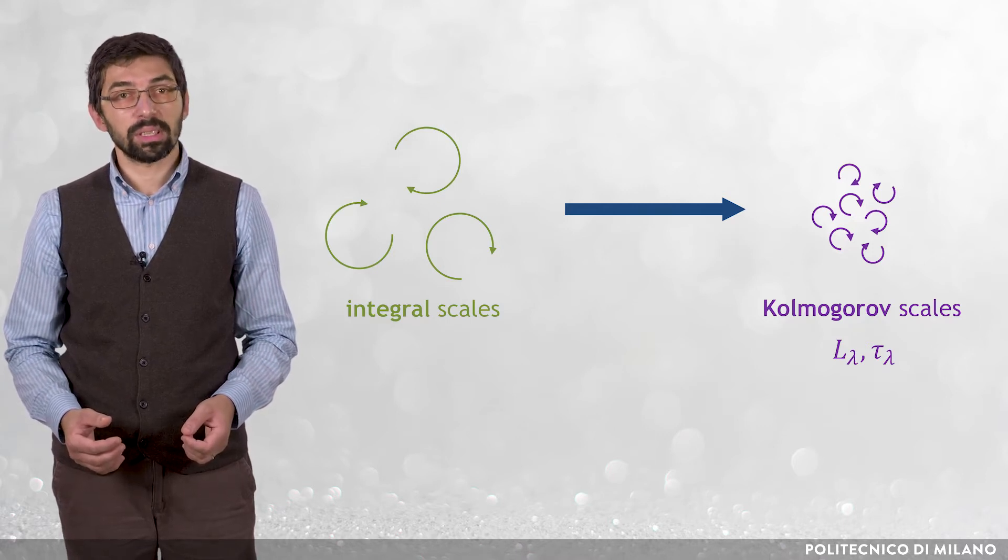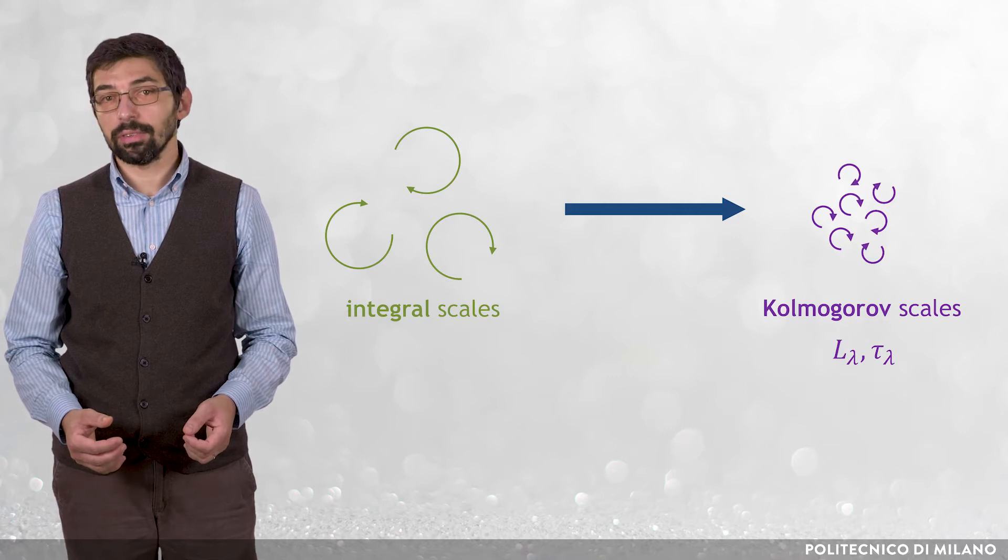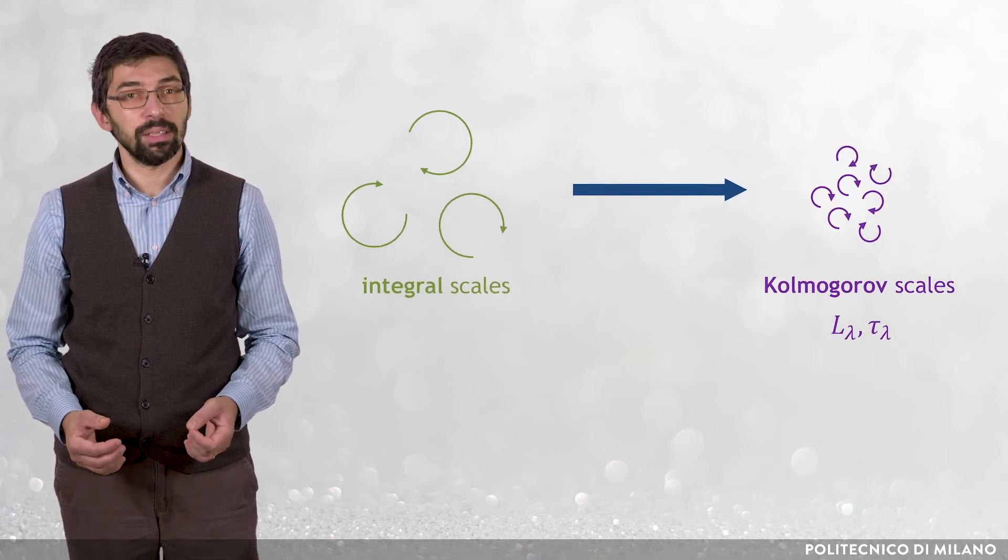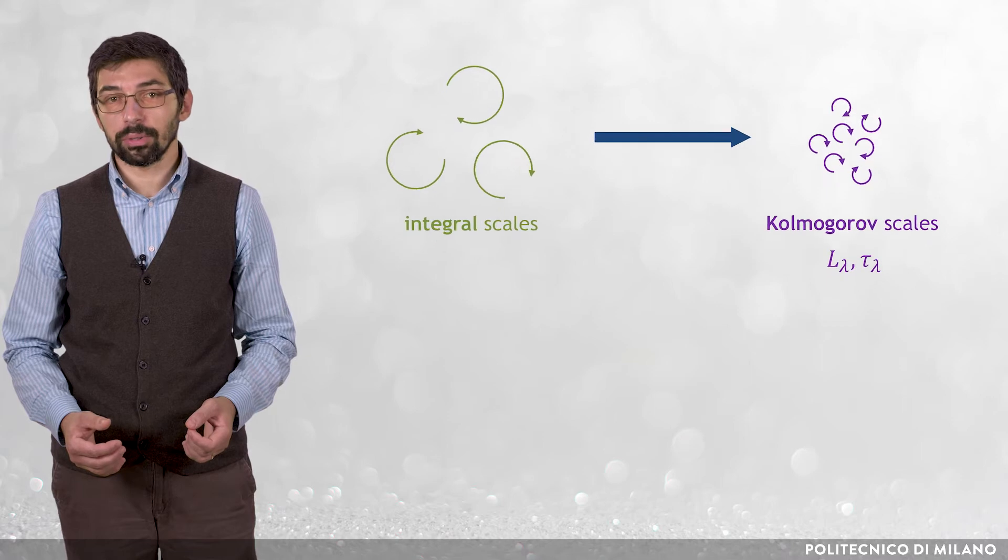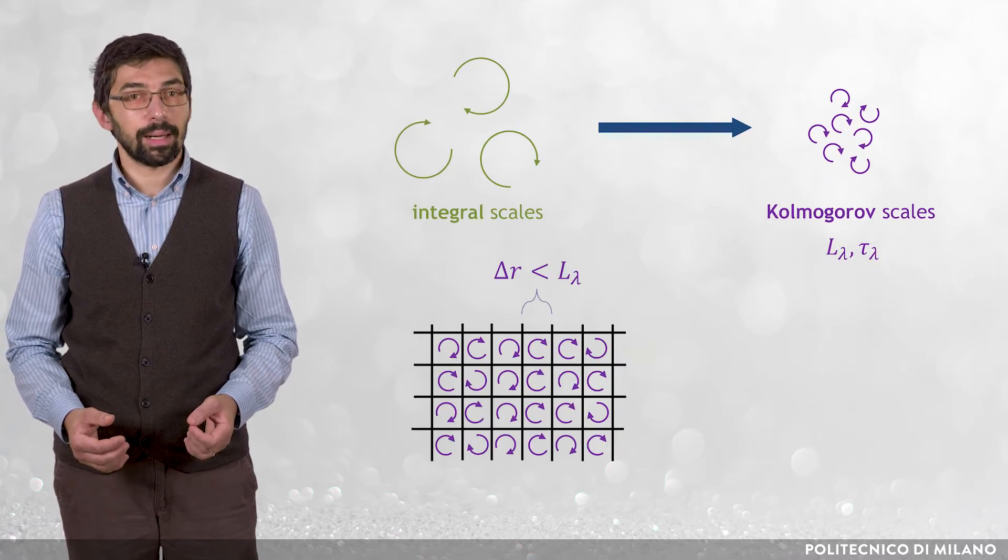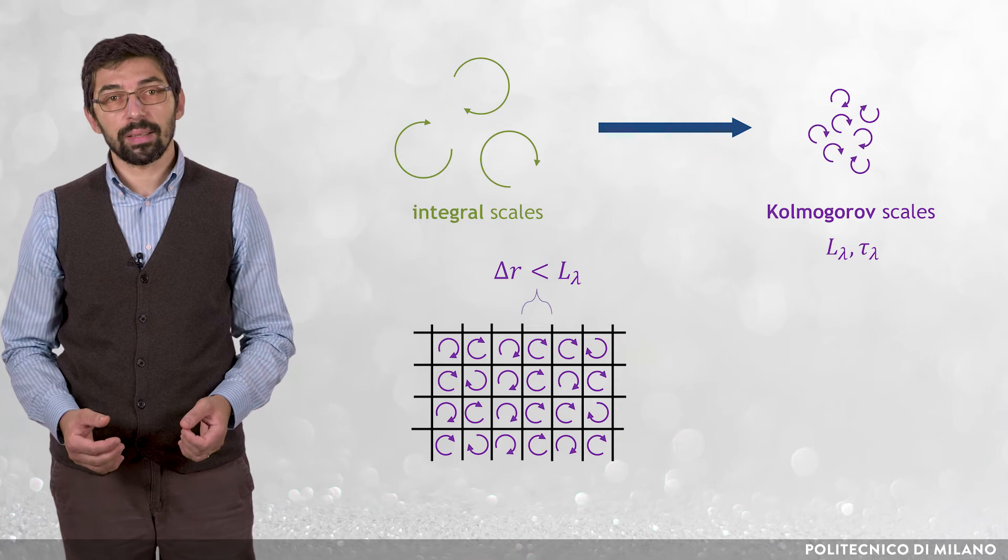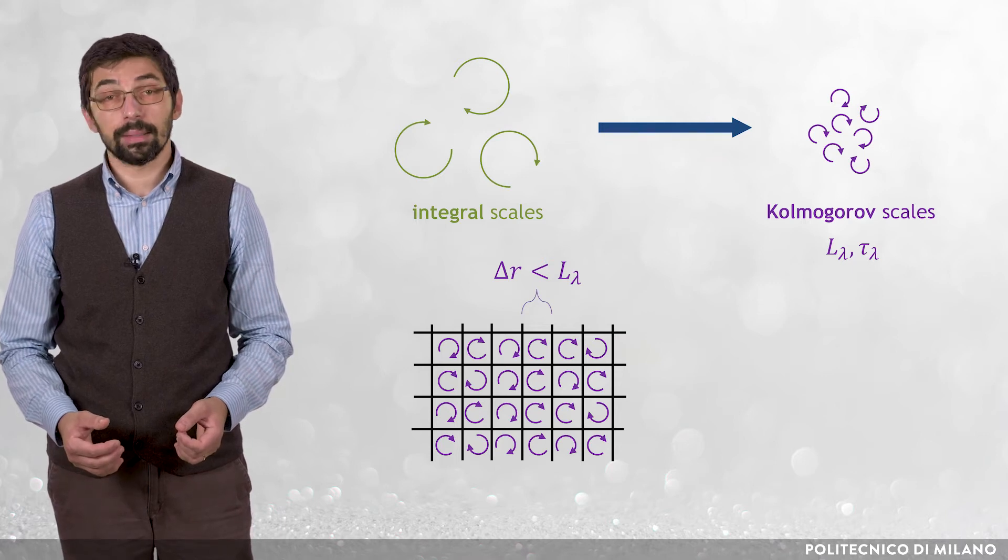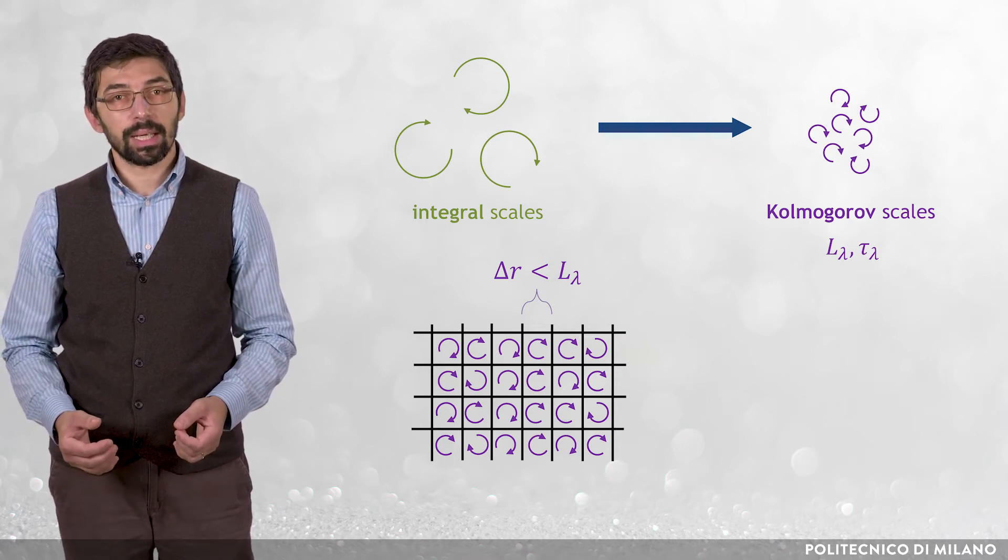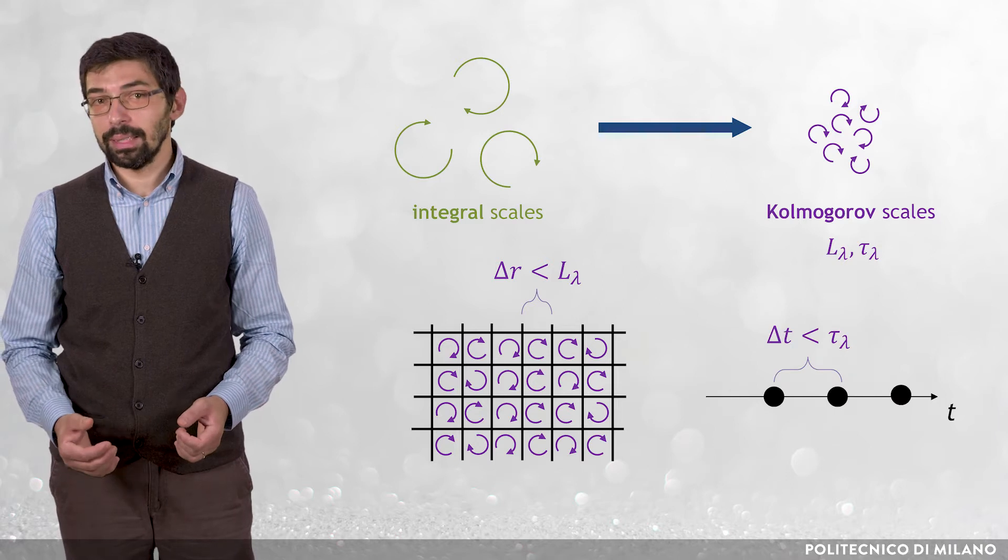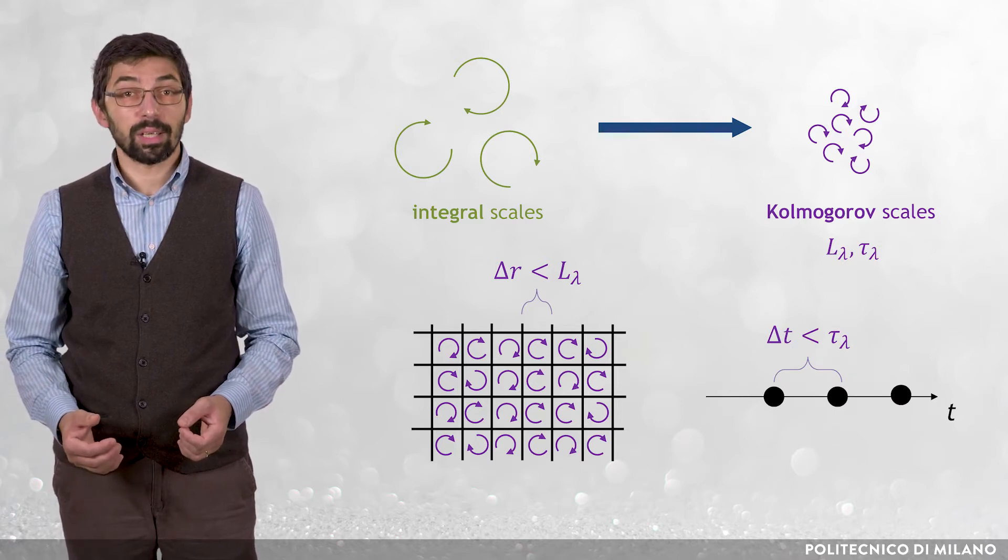If we use the same symbols for the particle-laden flow case, we can say that in order to produce an accurate solution, the size of the computational cells delta r must be smaller than L small lambda and, similarly, the time step size for time integration delta t must be smaller than tau small lambda.